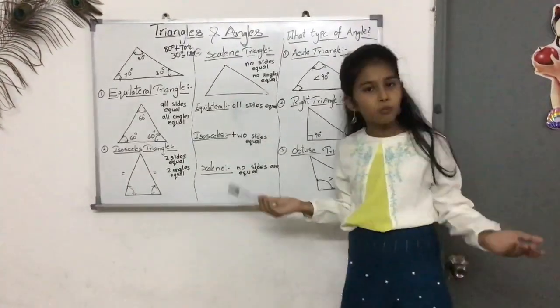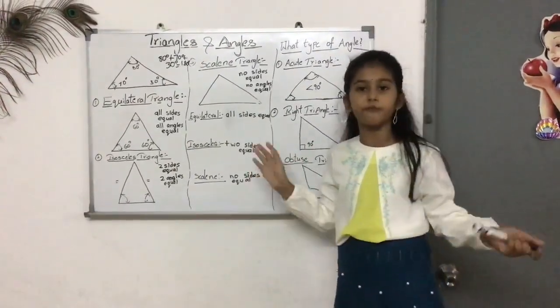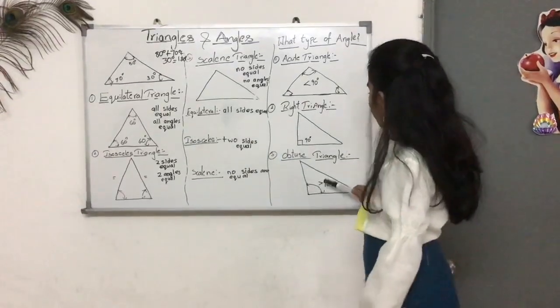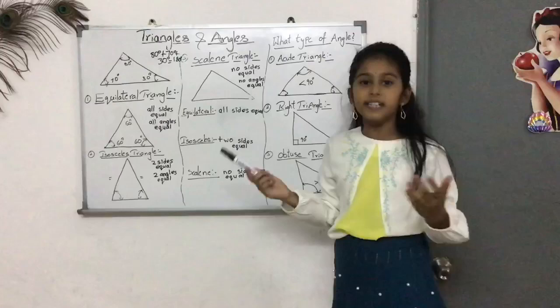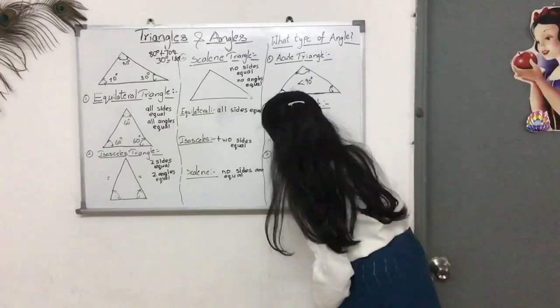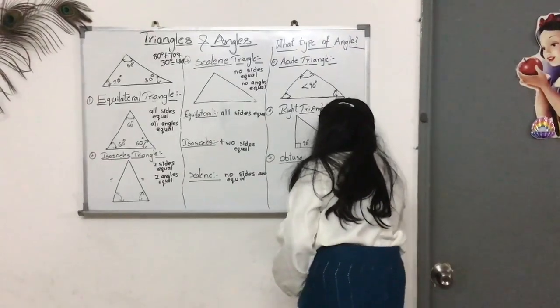And the final one we have is obtuse triangle. This obtuse triangle is very different from others. It has, this one angle is greater than 90 degrees. But, these angles are less than 180 degrees.